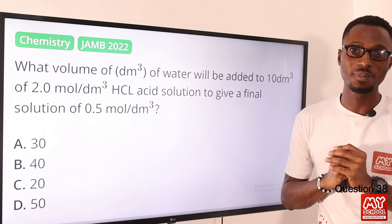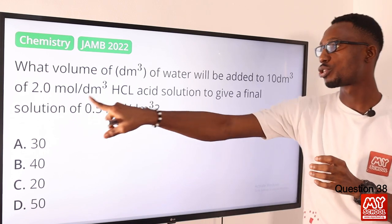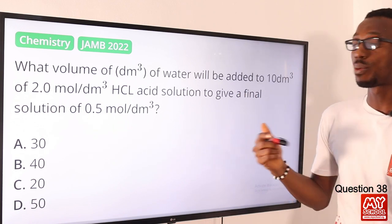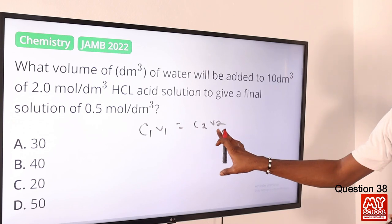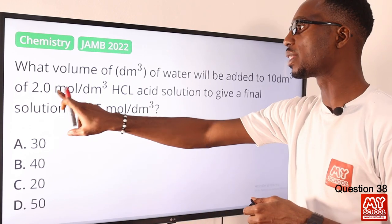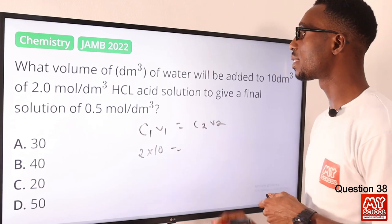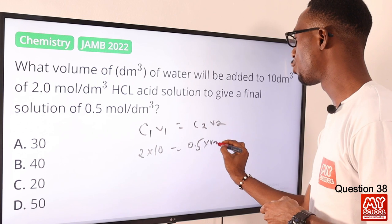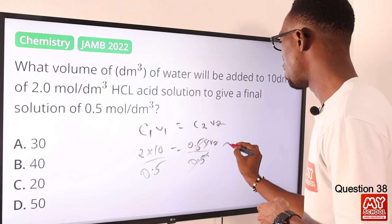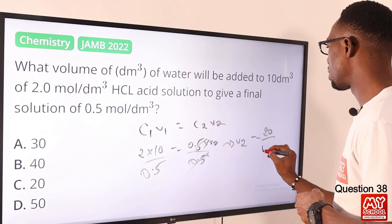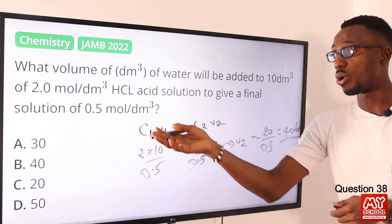Question 38. What volume in dm³ of water will be added to 10 dm³ of acid solution to give a diluted solution? Recall your principle of dilution: C1V1 = C2V2. My C1 is 2 mol/dm³, my V1 is 10, equals C2 which is 0.5, times V2. So 2 times 10 = 0.5 times V2. Divide both sides by 0.5, so V2 = 20 over 0.5, that is 40. So 40 dm³ of water should be added. So option B is the right option.